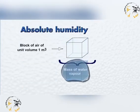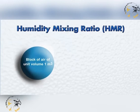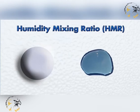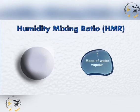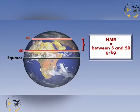Absolute humidity is the mass of water vapour contained in a unit volume of air, expressed in terms of grams per metre cubed. Humidity mixing ratio, or HMR, is a similar property to absolute humidity in that it is a measure of the amount of water vapour contained in a sample of air. But whereas absolute humidity is the mass of water vapour in a unit volume of dry air, the humidity mixing ratio is the ratio of the mass of the water vapour to the mass of the dry air, expressed in grams per kilogram. In temperate latitudes, the HMR value lies somewhere between 5 and 50 grams per kilogram.